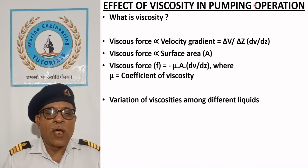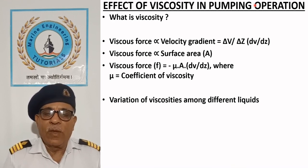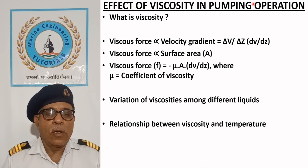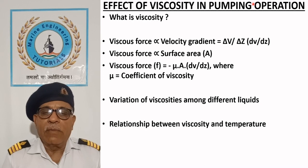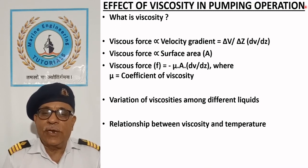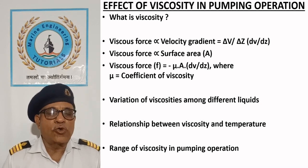Variation of viscosity among different liquids: Viscosity of liquids varies widely with rise in temperature. Water has low viscosity of 1 cSt at 20°C, whereas heavy fuel oil is highly viscous with viscosity of 700 cSt at 50°C. Viscosity of liquids varies inversely with rise in temperature. Thus, heavy fuel oil on ships is required to be heated to 140°C, corresponding to a viscosity of 15 cSt, to enable injection in the engine cylinder.